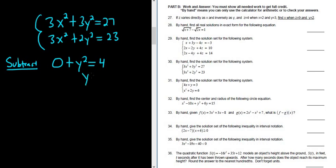All right, so we have y squared equals 4. Now to solve for y, we have to get rid of the 2, so we'll take the square root here of both sides. So that will give us y equals...